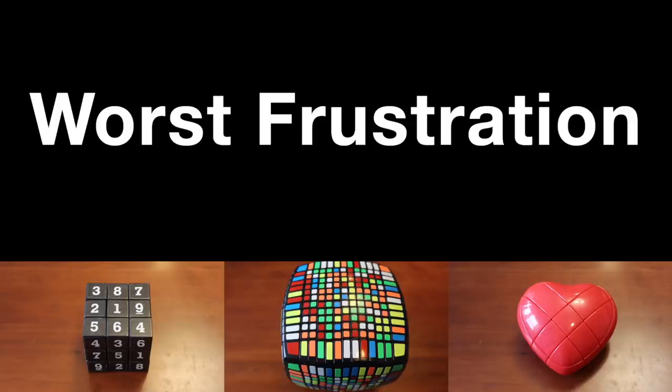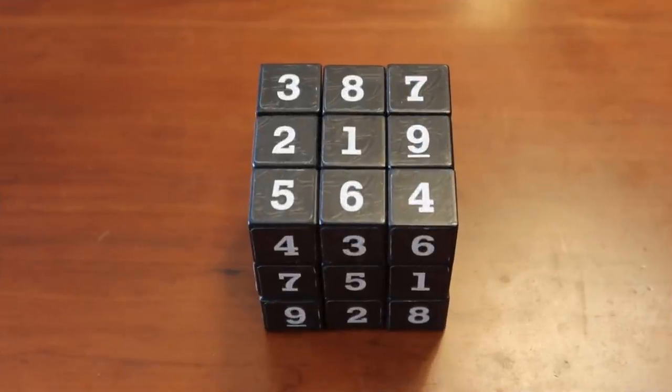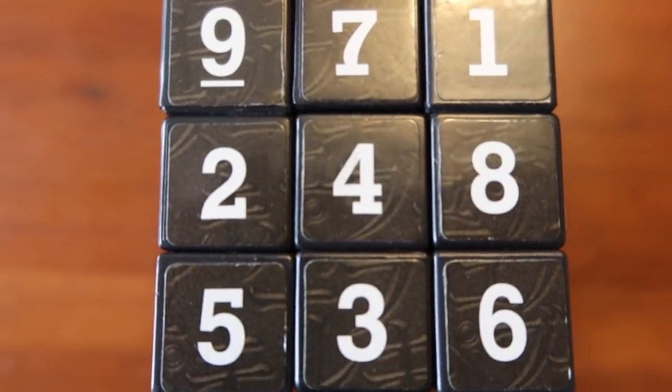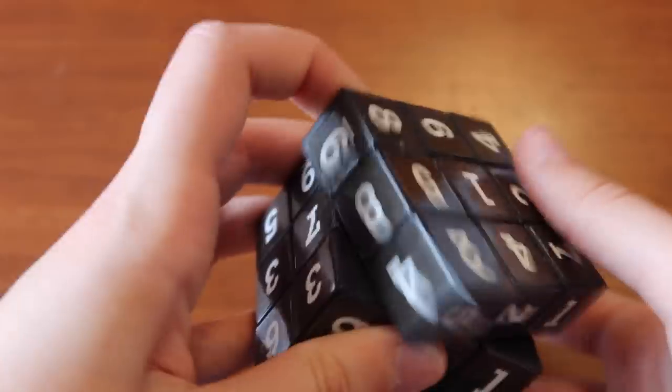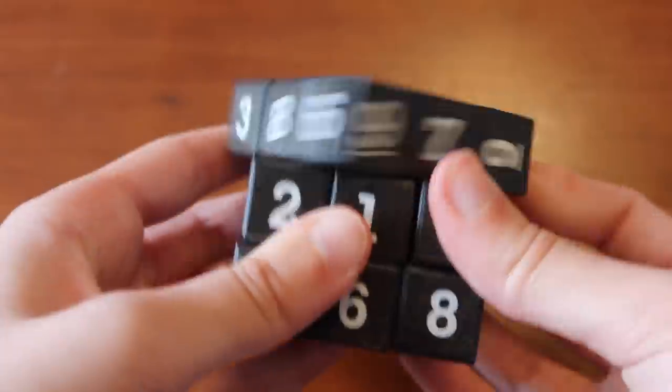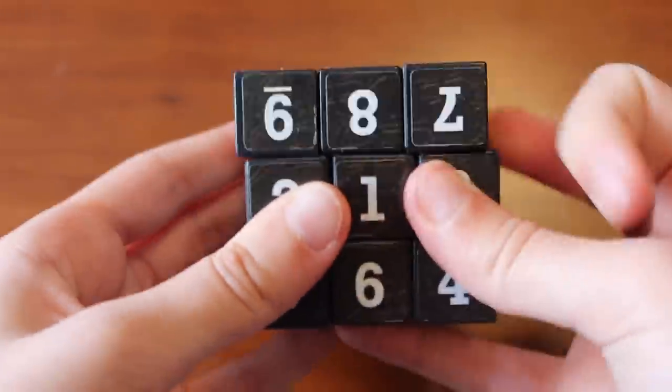This one was a hard choice but the winner in this category has to be the Sudoku cube. With the heart cube you can at least tell if a piece is in the right spot. It might take a little while to determine, but with the Sudoku cube it's pretty much impossible. It's just fully guess and check. There's really no way to tell and it just took me longer than any of the other cubes to solve.